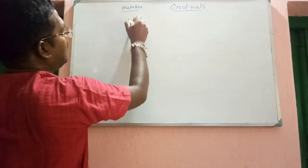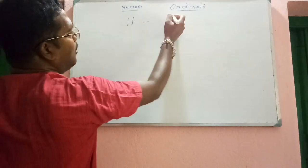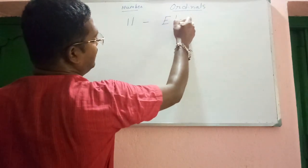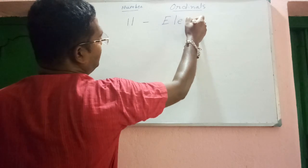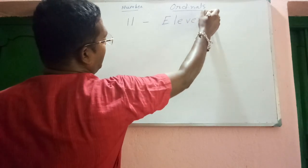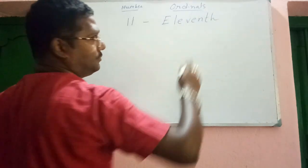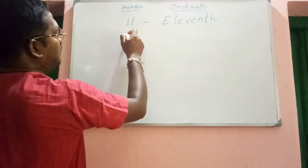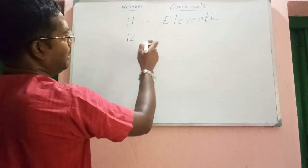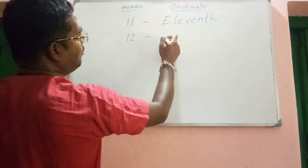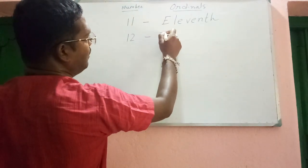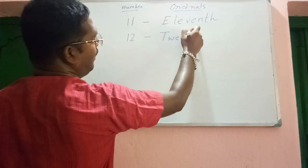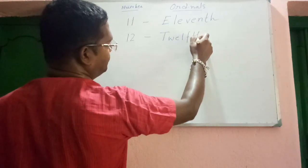Next, number is eleven and ordinal will be eleventh — E-L-E-V-E-N-T-H. Okay, and number twelve: the ordinal will be twelfth — T-W-E-L-F-T-H.